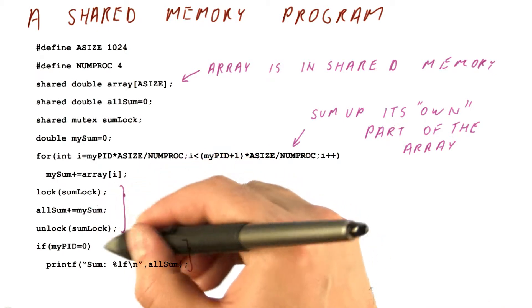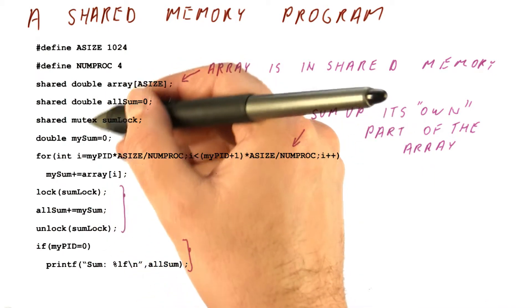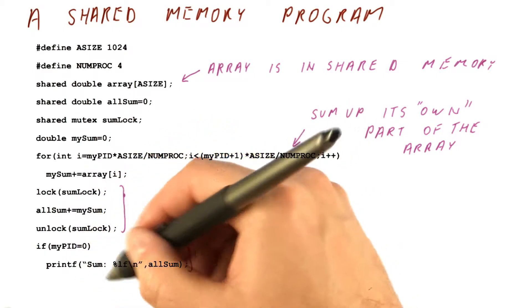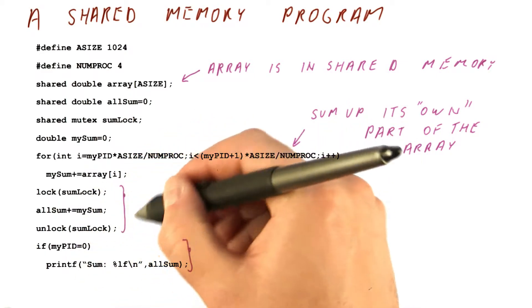But because this can be done in any order, core 0 could be the one that does this first and then prints out only its part of the sum because the others have not updated this yet.